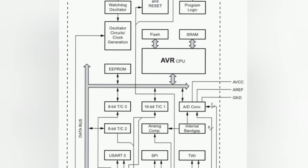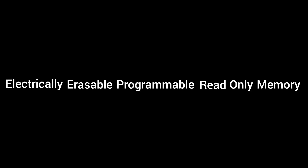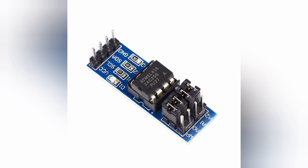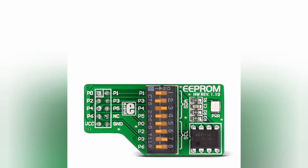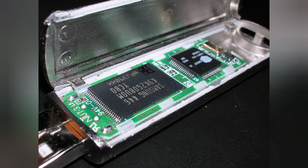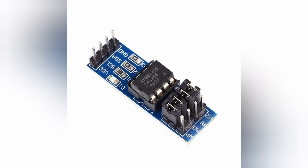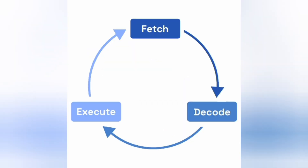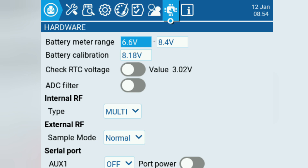And finally, we have EEPROM. In microcontrollers, EEPROM, which stands for Electrically Erasable Programmable Read-Only Memory, is a type of non-volatile memory used to store small amounts of data that must be preserved even when power is off. It's similar to Flash in that it holds data even when power is removed, but there are some key differences. Flash Memory is used to hold our program that we upload to the microcontroller, while EEPROM stores data generated during CPU operation that needs to be saved even when power is turned off. Examples include settings, calibration values, and so on.